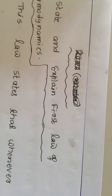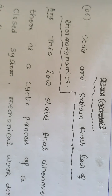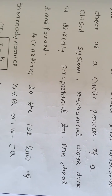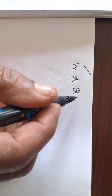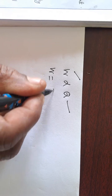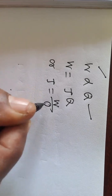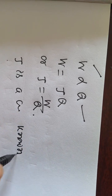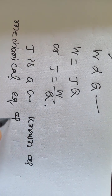State and explain the first law of thermodynamics. The first law of thermodynamics states that whenever there is a cyclic process of a closed system, mechanical work done is directly proportional to the heat transfer. According to the law, W is directly proportional to Q, where W is the work done and Q is the heat transfer. Mathematically, J is equal to W by Q, where J is a constant known as the mechanical equivalent of heat.